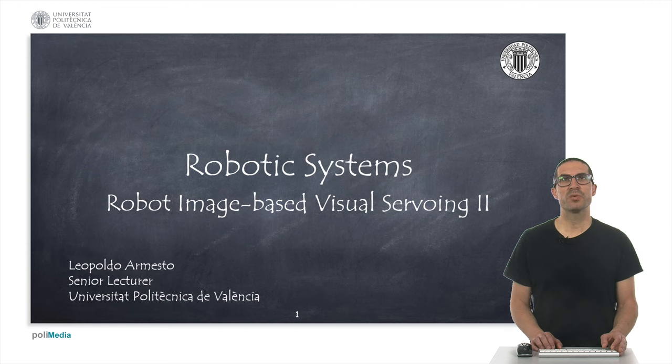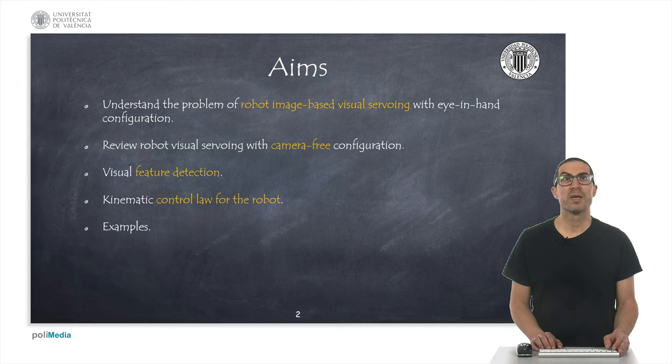Hello, in this presentation we will continue explaining robot image-based visual servoing. We will focus on how to apply this method to control a robot manipulator. This is a continuation of our previous video. The aims are to understand the problem of control with visual feedback, also known as image-based visual servoing, using a robot manipulator with an eye-in-hand configuration.